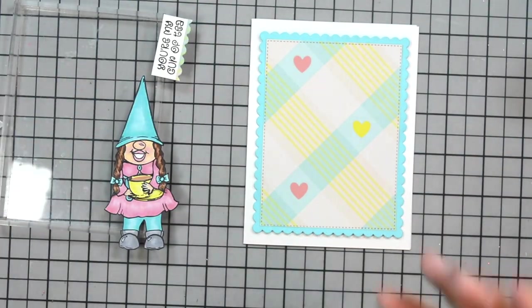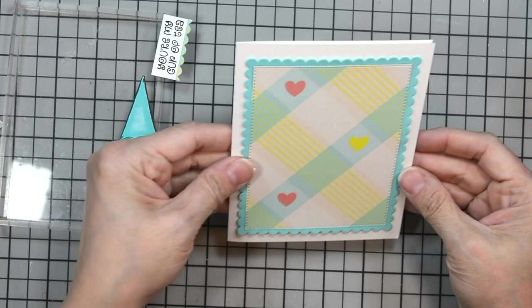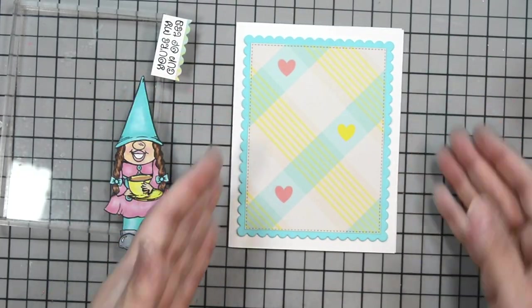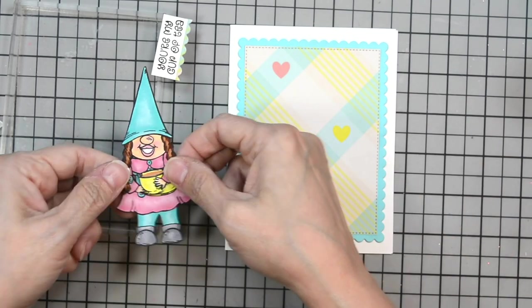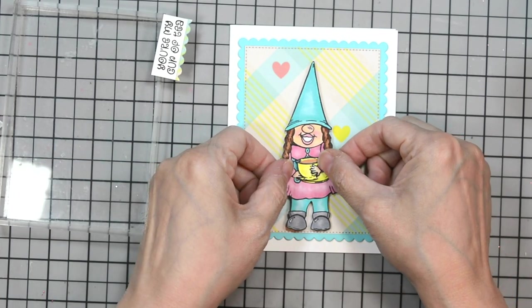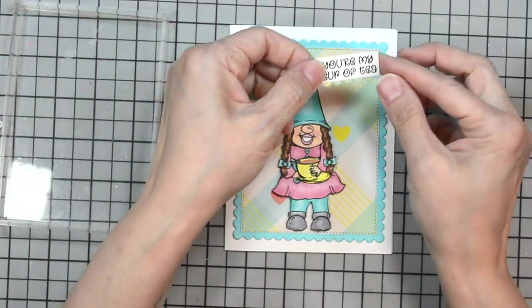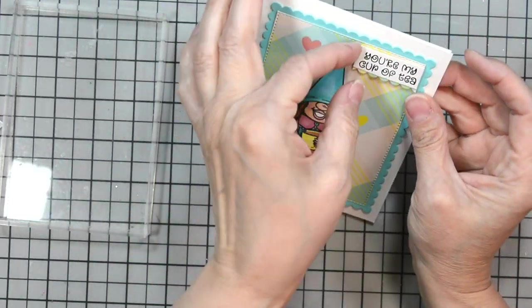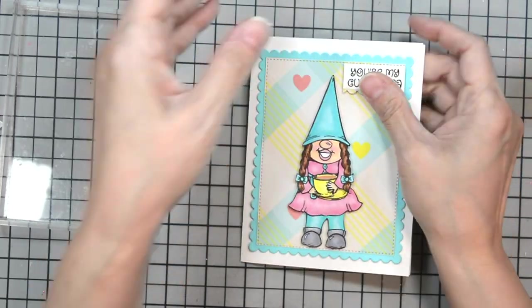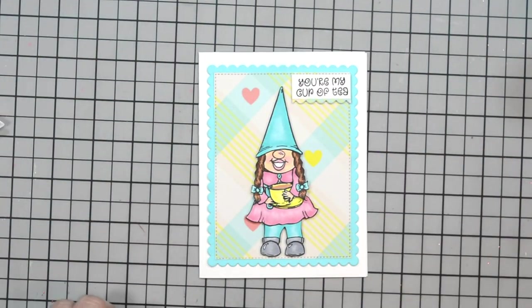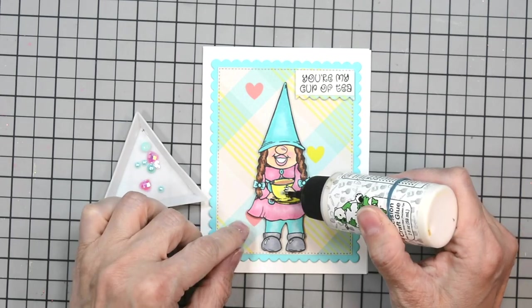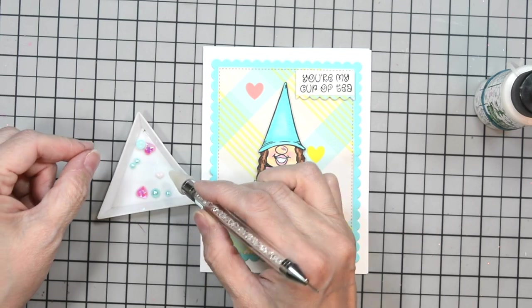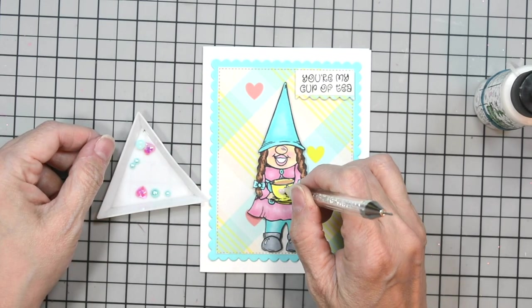This card came together pretty quickly. The colors for my coloring of the gnome were inspired by the patterned paper itself. You can see the blues of her hat and leggings are the blues in the patterned paper. Her teacup is yellow and she's wearing pink like the pink hearts. It's an easy way to pull colors so everything coordinates. I get my sentiment on there as straight as possible.